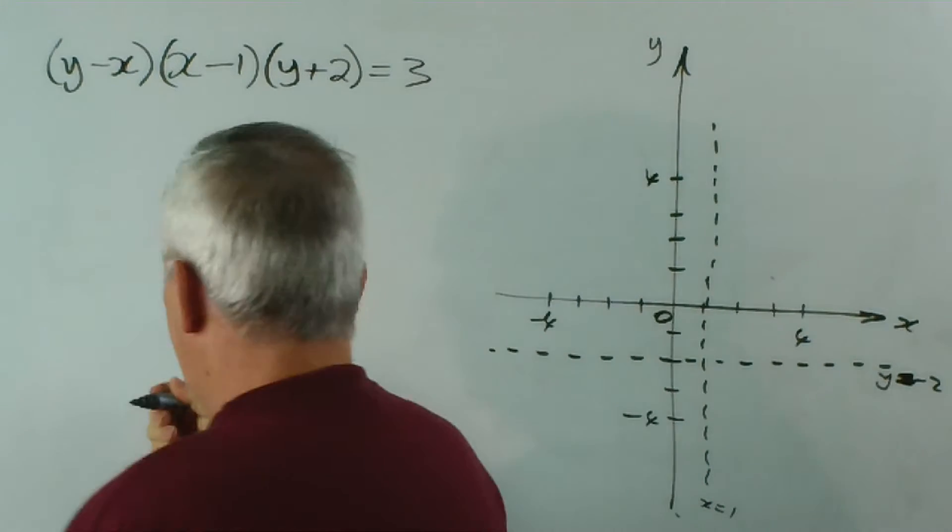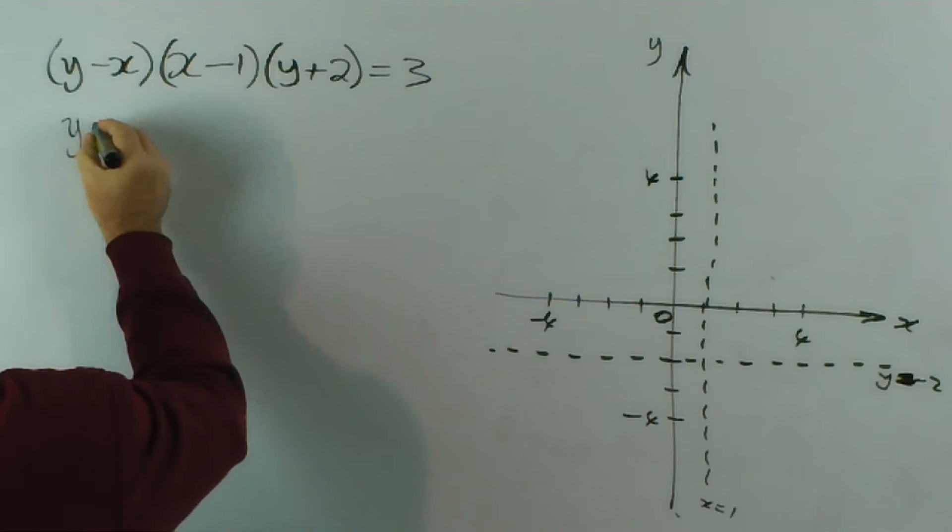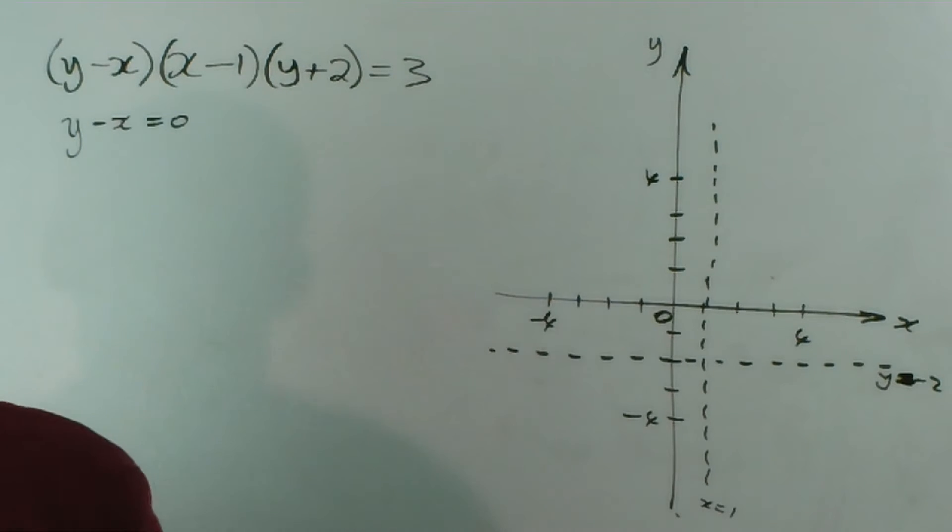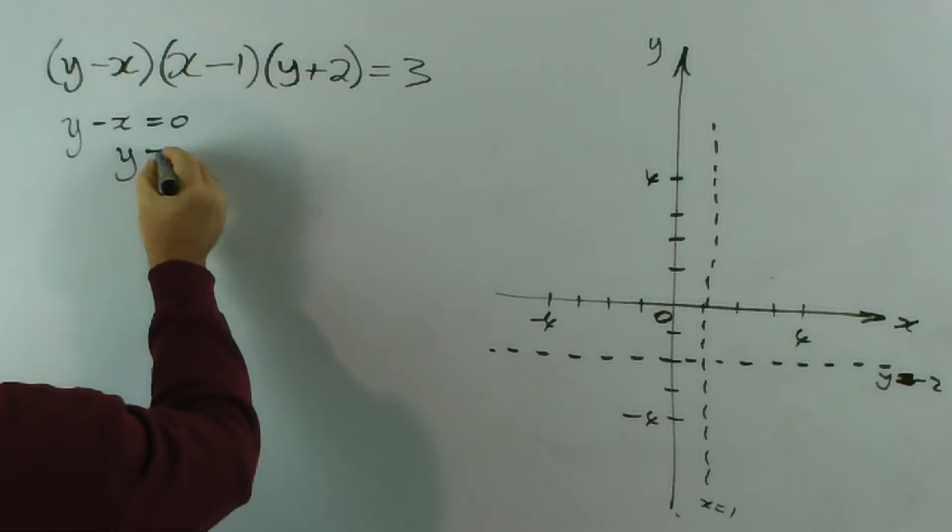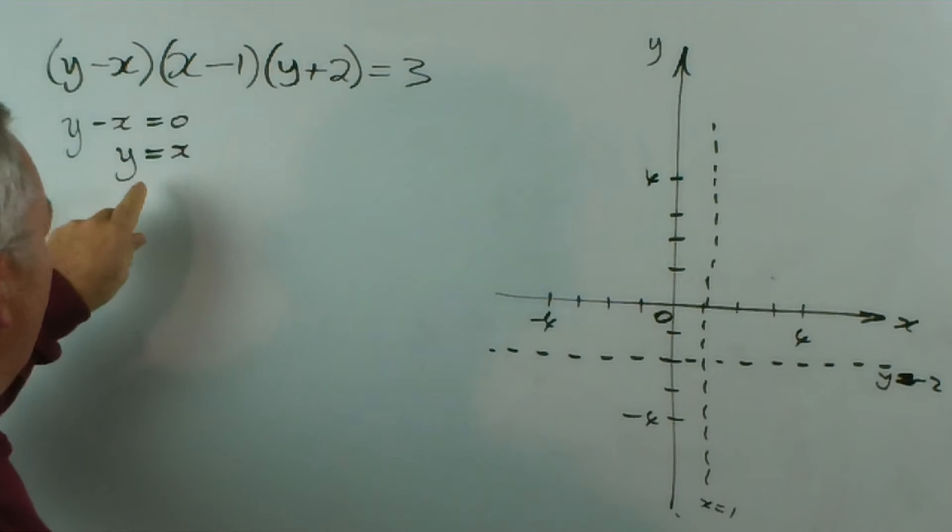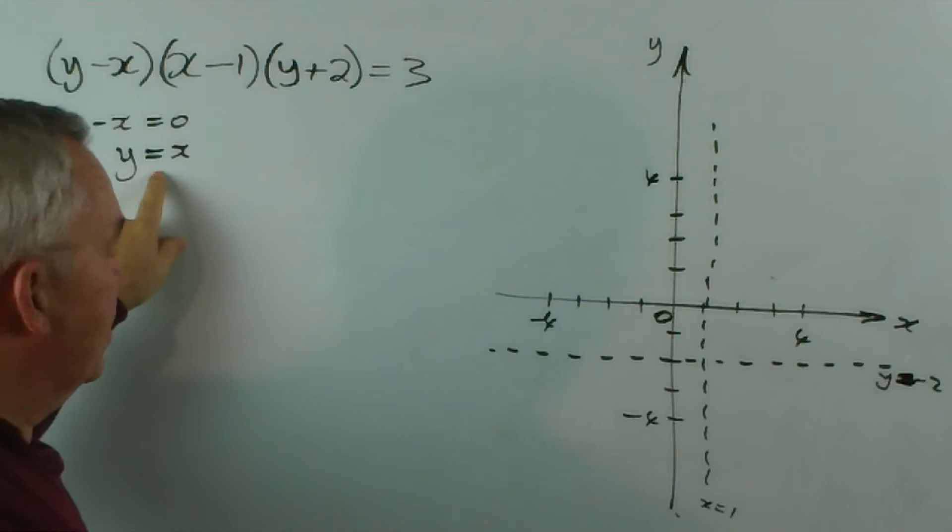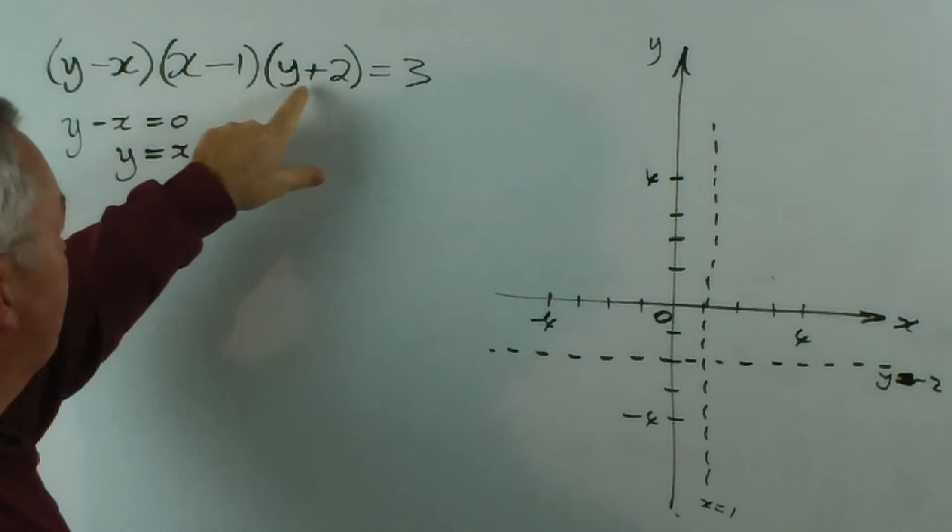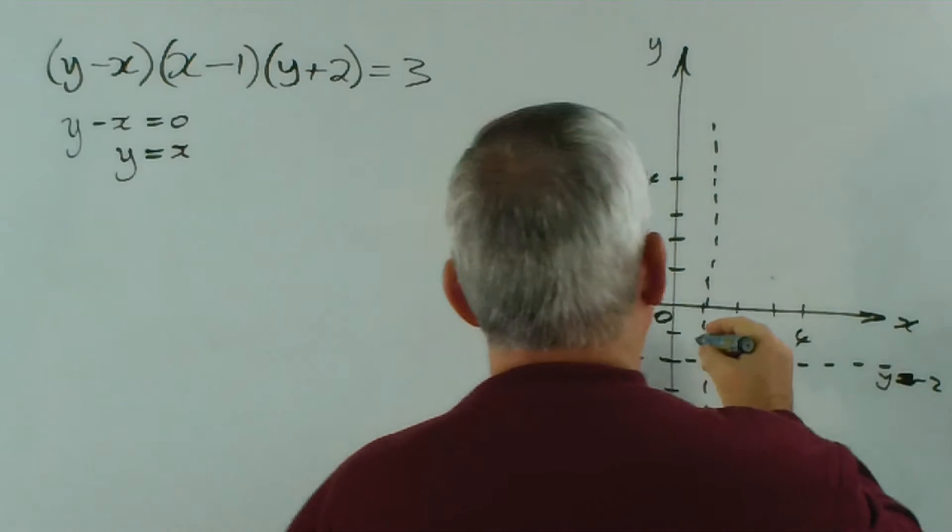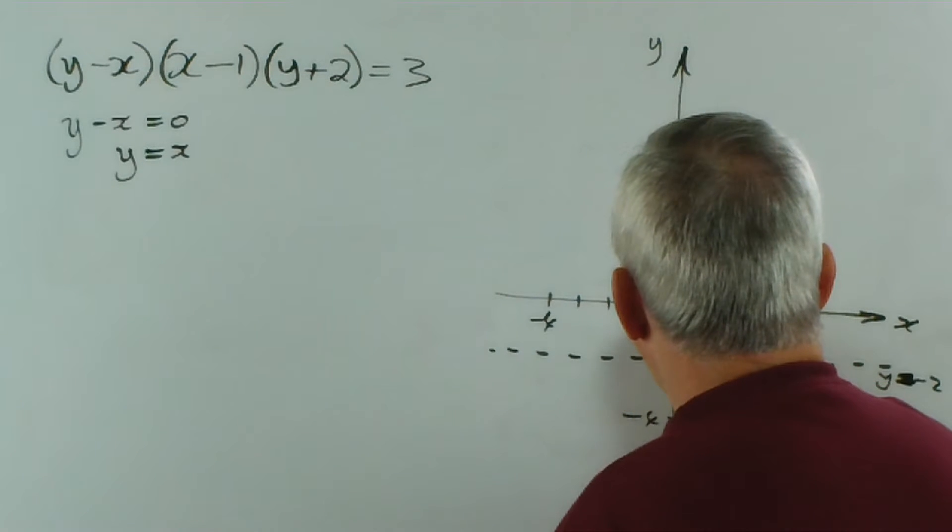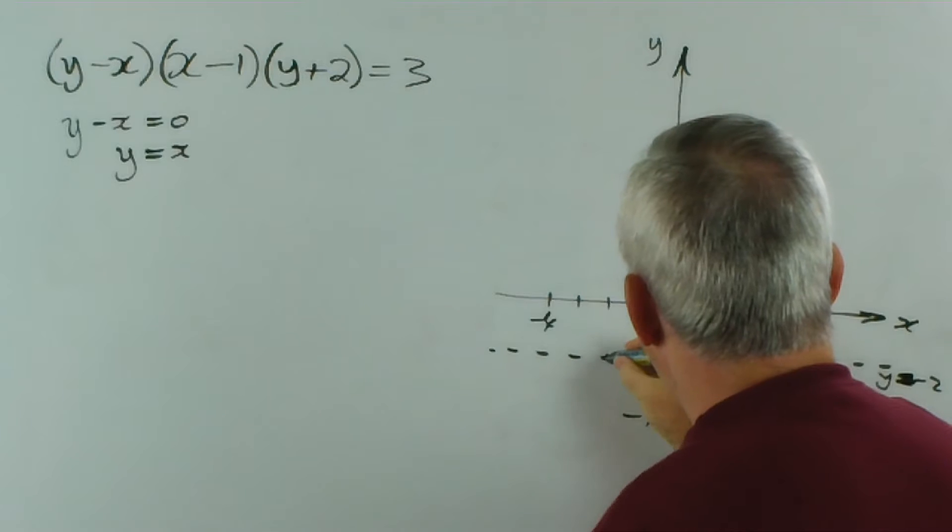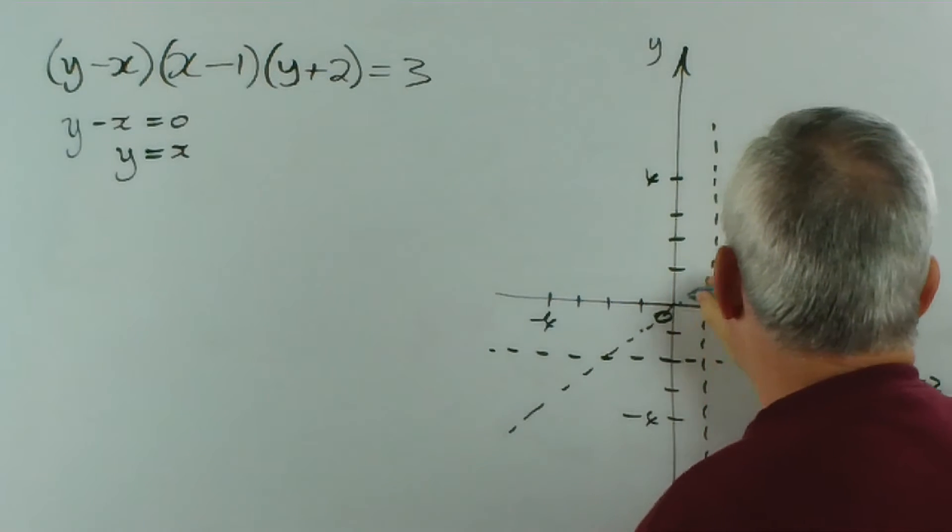What would we get if y minus x equals zero? Well, if we add x to both sides we find we've got this equation. And what it means is that if y actually equals x we get a zero here and we get an undefined equation. We simply cannot solve it. So y equals x causes us the same kind of problem as x equals one and y equals negative two. If I draw y equals x, it'll go through the origin at a 45 degree angle.